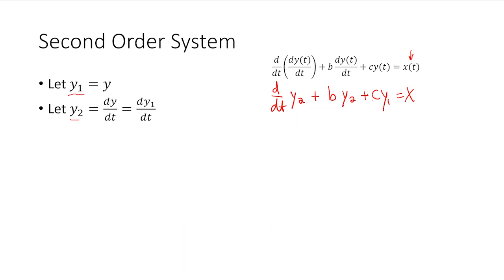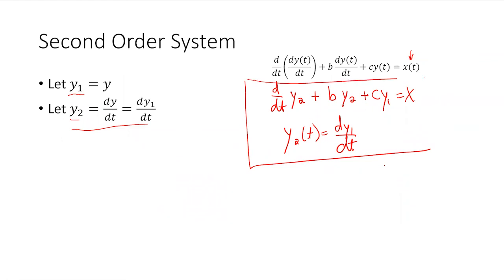Y2 and y1 are both unknowns. Can I solve a system of equations with one equation and two unknowns? No. I need another equation — which I already have. The second equation is that y2(t) equals dy1/dt. These two equations form a system that defines what's going on in a second order system: basically two first order equations representing one second order equation.